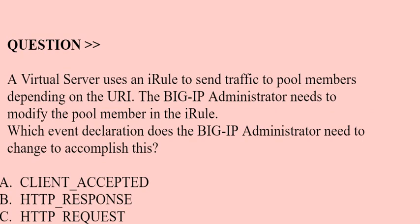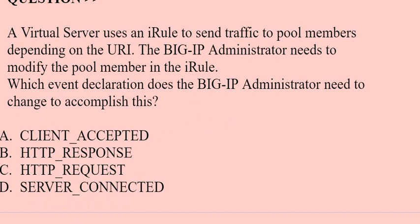Question: A virtual server uses an iRule to send traffic to pool members depending on the URI. The BIG-IP administrator needs to modify the pool member in the iRule. Which event declaration does the BIG-IP administrator need to change to accomplish this? Option A: CLIENT_ACCEPTED. Option B: HTTP_RESPONSE. Option C: HTTP_REQUEST. Option D: SERVER_CONNECTED.